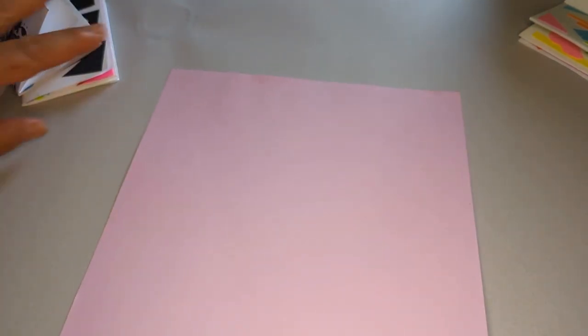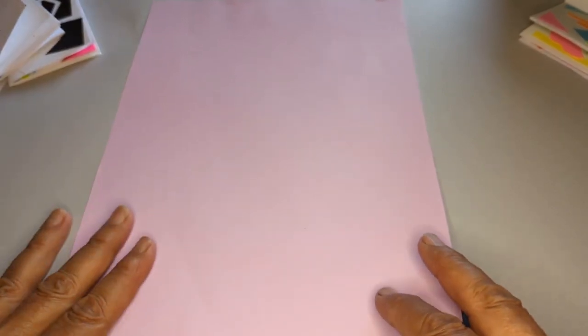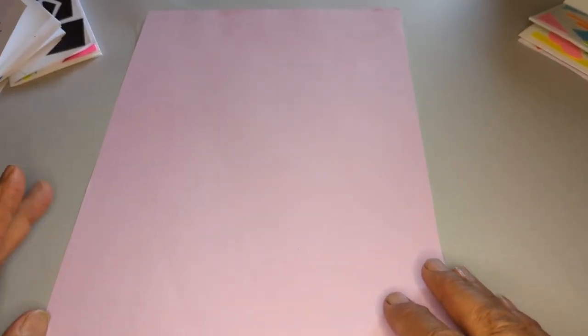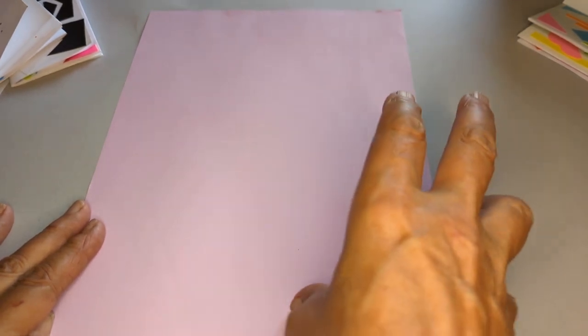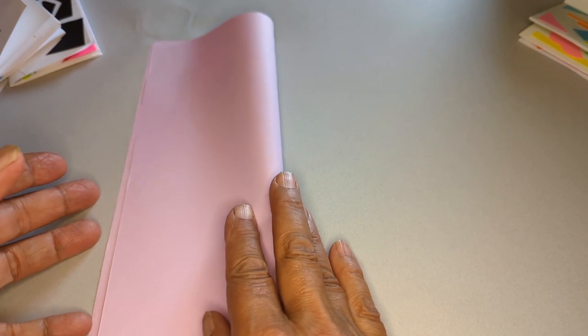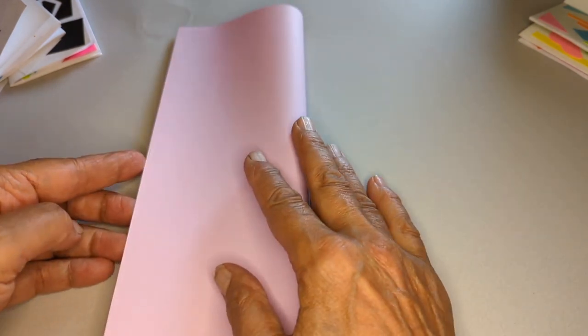So first off I'm just starting with regular copy paper. Now this first fold is important to keep in mind that the first fold is to fold it so that it's long and narrow. Make sure you fold it nicely in half.